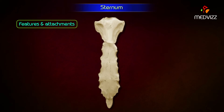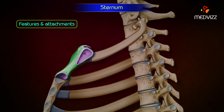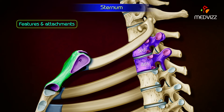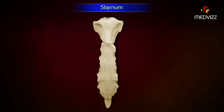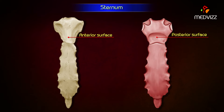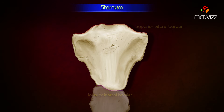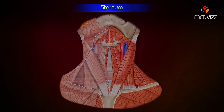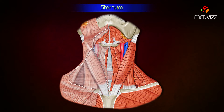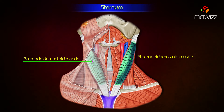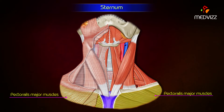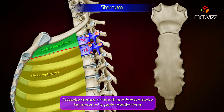Features and attachments. Manubrium. It is roughly quadrilateral in shape and lies opposite the third and fourth thoracic vertebrae. It is the thickest and strongest part of the sternum. Its anterior surface on each side provides attachment to the sternal head of the sternocleidomastoid and pectoralis major muscles. The posterior surface is smooth and forms the anterior boundary of the superior mediastinum.